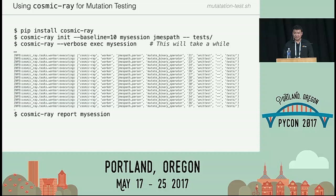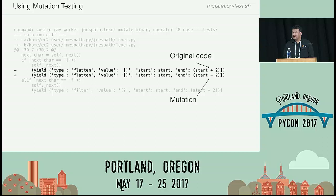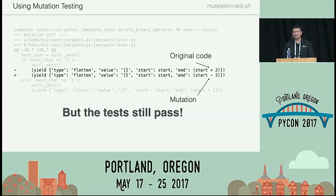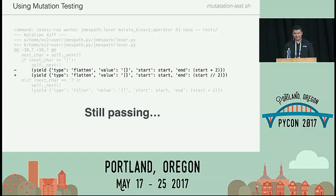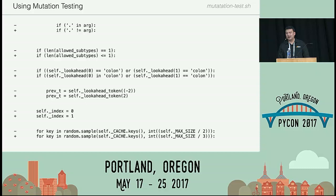Once it's done, you use `cosmic-ray report` to see what it was able to mutate. With the JamesPath lexer, here are some examples in a diff format: it changed `start + 2` to `start - 2` and everything passed — you shouldn't be able to end a token before it started, and a property test could have caught this. It also showed that dividing by two or squaring the number still passes all tests. The framework mutates binary operators (e.g., `in` to `!=`, `==` to `<=`), changes constants like `self.index = 0` to `self.index = 1`, and runs your test suite to see what happens.